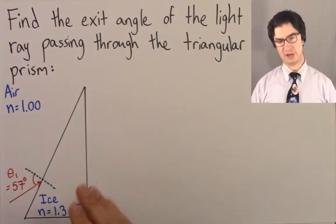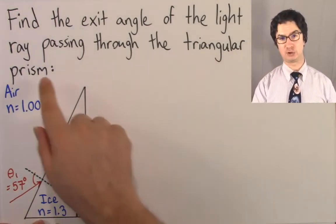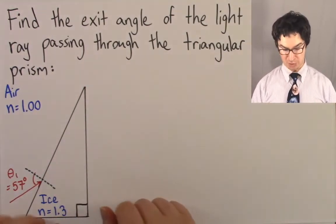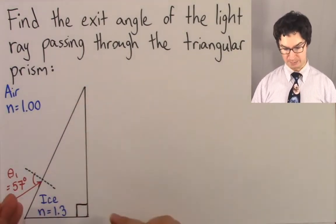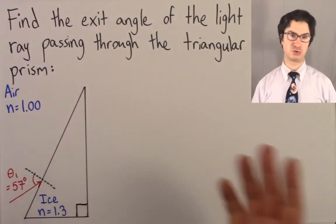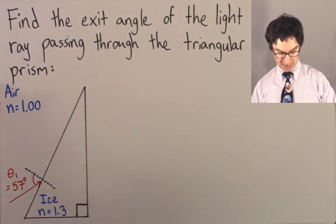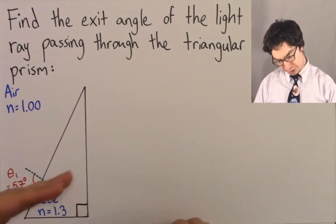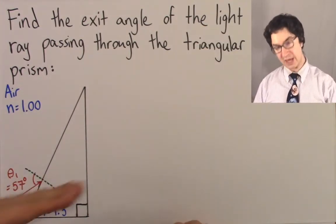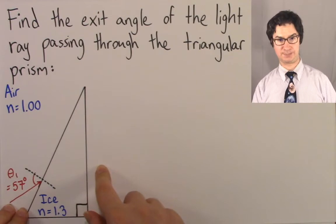This is an example in which we try to calculate the angle at which a light ray is going to exit from a triangular prism. A triangular prism is simply a triangle-shaped piece of translucent material. In this case, it's ice. So we're going from air into a triangle of ice, and we're going to try to predict at what angle this light ray is going to exit the ice.